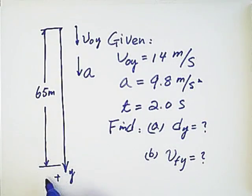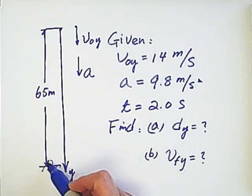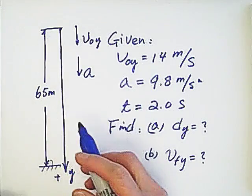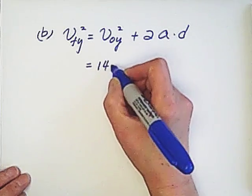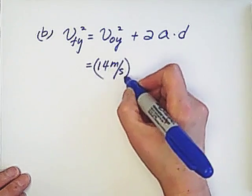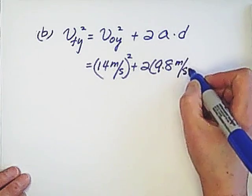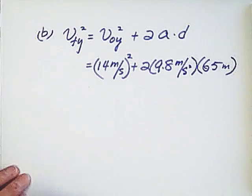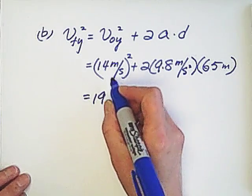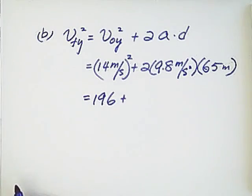We're looking for the final velocity just before the stone hits the ground. So the displacement we need for the 65. So we have 14 meter per second square plus 2 times 9.8 meter per second square times 65 meter. So we got 196, 14 square plus 2 multiplied by 9.8, multiplied by 65.